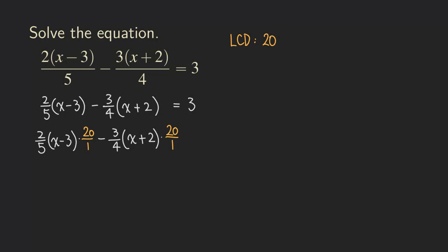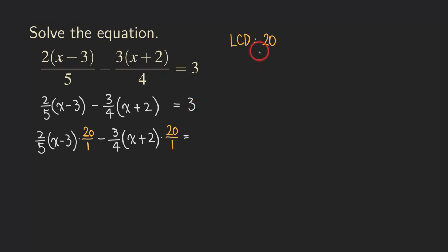On the right-hand side of the equation, even though there is no fraction, we still need to multiply by the LCD. Even when there is no fraction on the right-hand side, we also need to multiply that term — this 3 — by the 20. So we are going to get 3 times 20. In this case, we don't really need to write 20 over 1, because we are just multiplying two whole numbers.